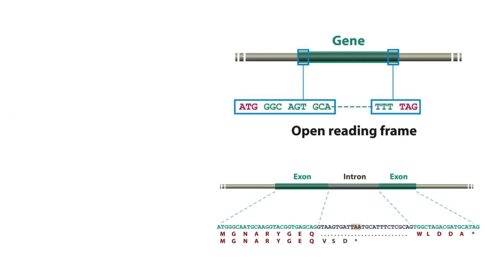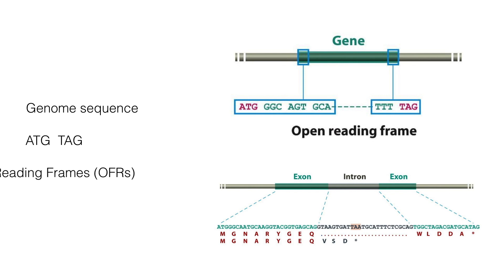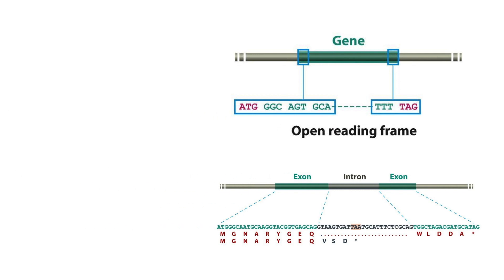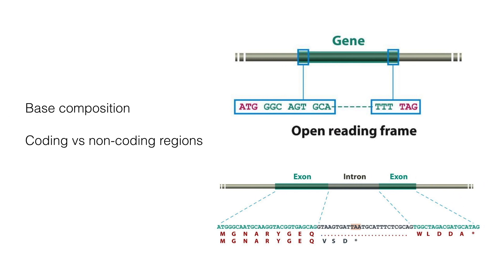Genes are predicted by analyzing genome sequence. Anything between ATG and a termination codon, like TAG, is considered an open reading frame, or ORF. There would be too many of these, as genes can exist in 3 coding frames, and it is sometimes not obvious which one is the real one.